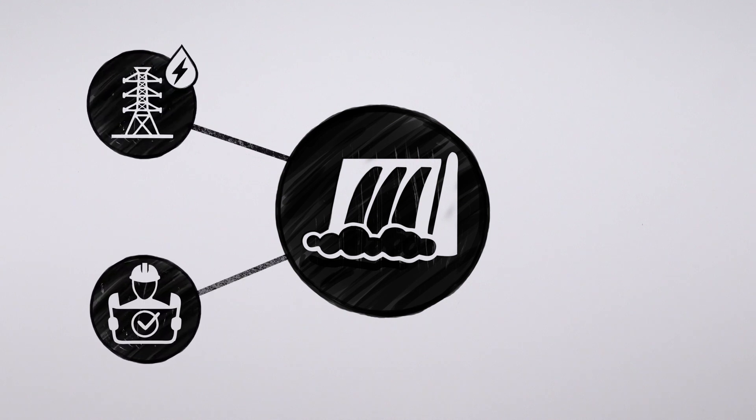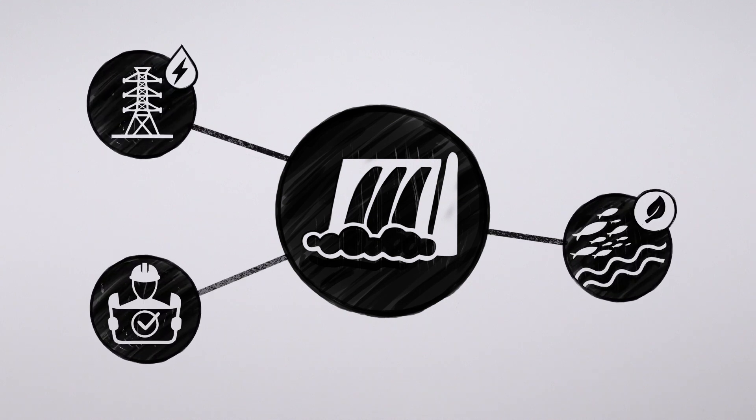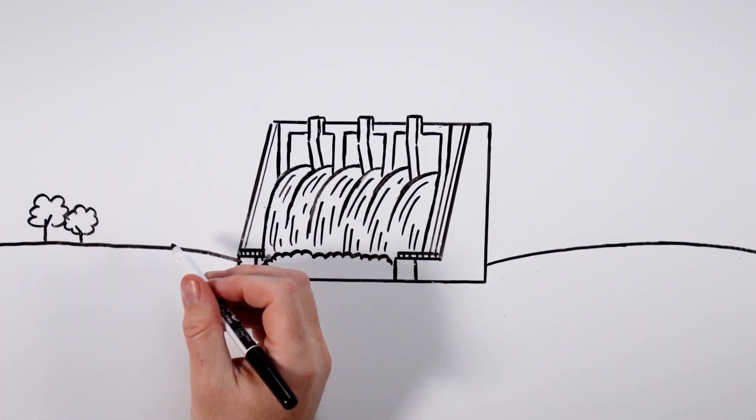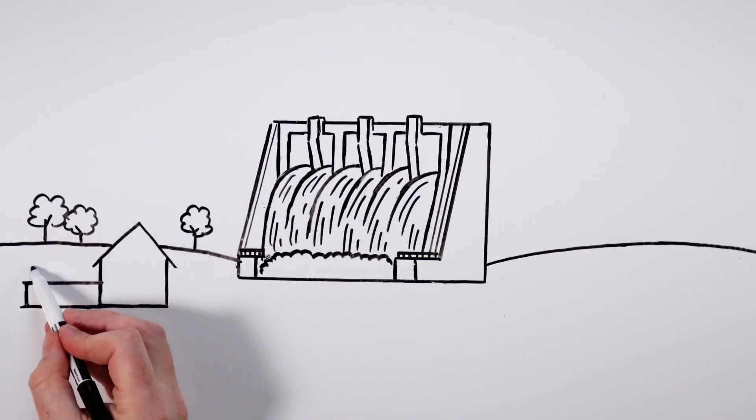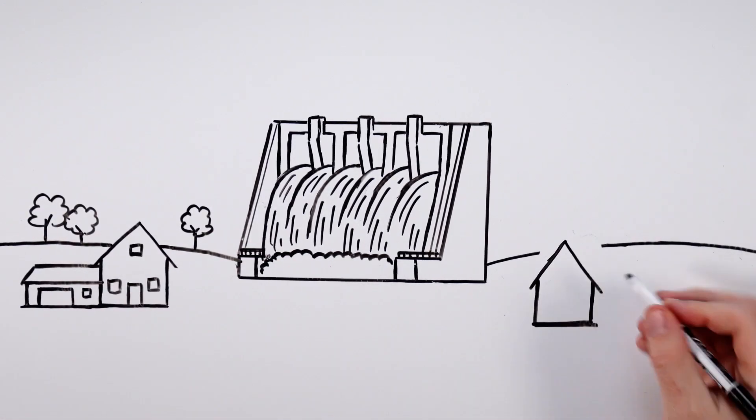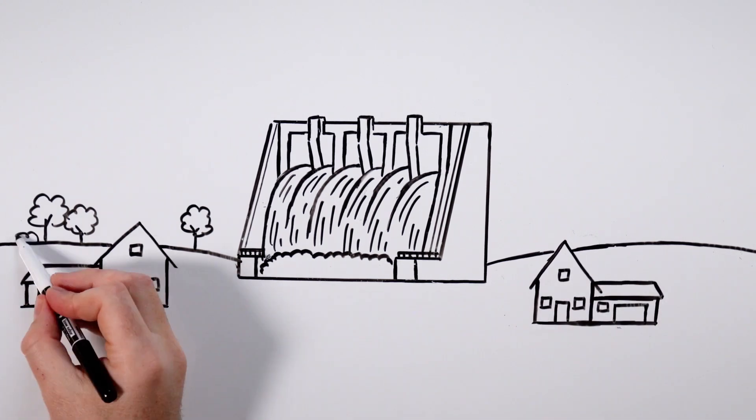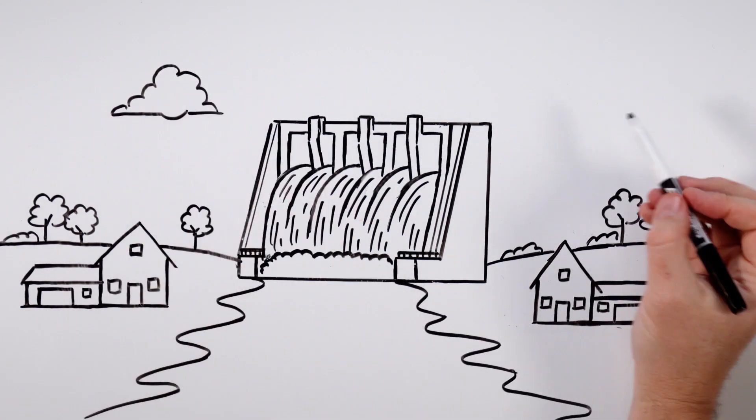grid resiliency, dam safety, and environmental conditions. Safer dams and improved environmental precautions like fish passage technologies could help hydropower facilities protect their local ecosystems, wildlife, and communities.